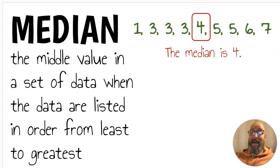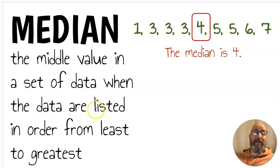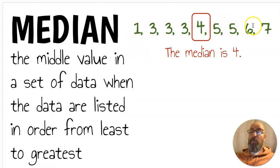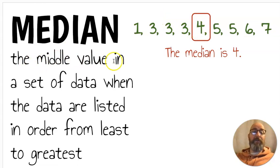Last is the word median. The median is the middle value in a set of data when the data are listed in order from least to greatest. I put those numbers in order from least to greatest, and the one in the very middle is the median.